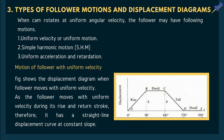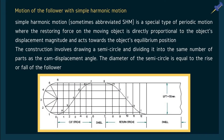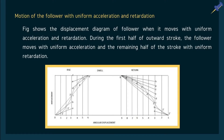Simple harmonic motion (SHM) is an oscillatory motion where the acceleration of the follower at any position is directly proportional to its displacement from the mean position. The construction involves drawing a semicircle and dividing it into the same number of parts as the cam displacement angle; the diameter of the semicircle equals the rise or fall of the follower. For uniform acceleration and retardation, during the first half stroke the follower moves with uniform acceleration, and during the remaining half stroke it decelerates by equal amounts in equal time intervals.